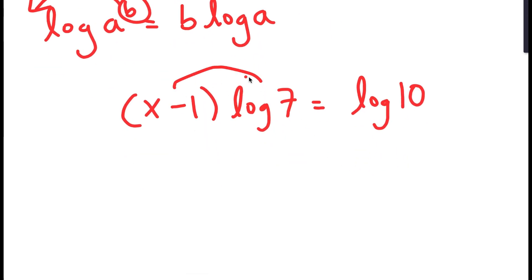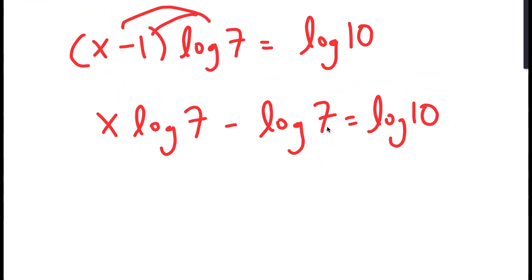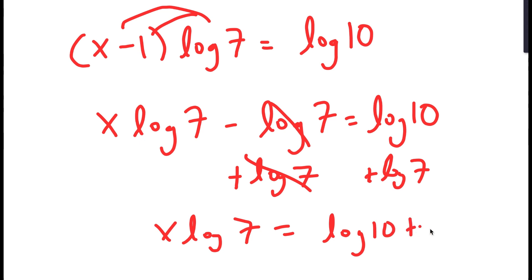And now I'm going to distribute log 7. x times log 7 minus log 7 is equal to log 10. So now from here, I'm going to add log 7 on both sides. So these two cancel out, and I get x times log 7 is equal to log 10 plus log 7.